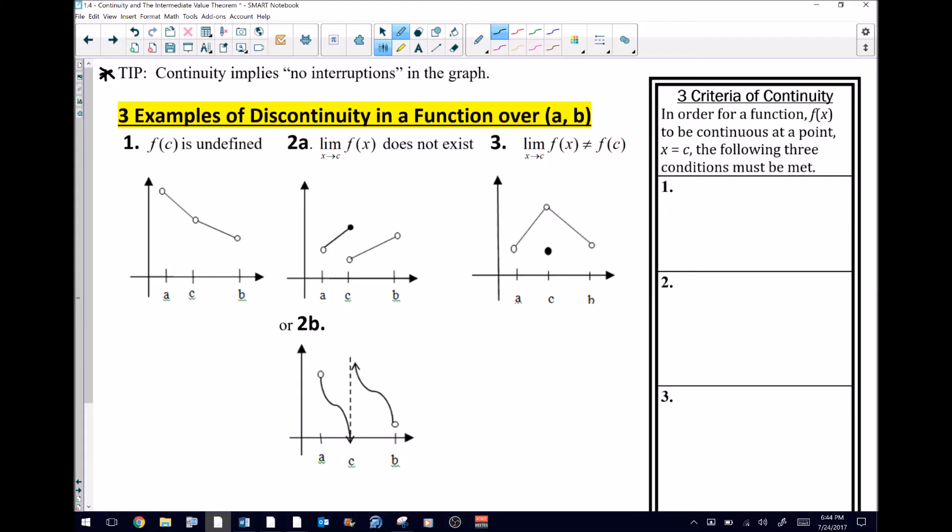What I've got here on the graphs are four different sketches, and out of the four sketches I'm illustrating three different examples of where a function would not be continuous. In other words, there is a discontinuity specifically at a point that I'm going to define as C. I want you to make sure that you're aware that all of these functions are being defined over an open interval a to b.